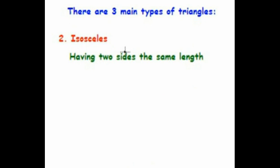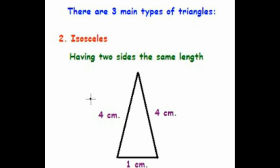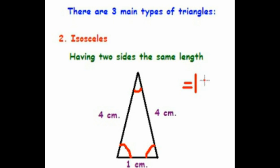The second kind of triangle is called an isosceles triangle. Isosceles means having two sides the same length. In our example, we have two sides that are 4 centimeters and one side that is 1 centimeter — a perfect example of an isosceles triangle. An isosceles triangle does not have the same angle sizes; in fact, two of the angles are going to be the same, and this one will be different. Because it's a triangle, all the angles still add up to 180 degrees.